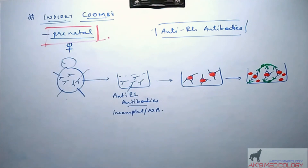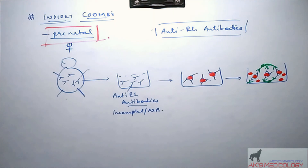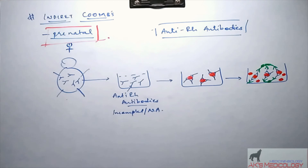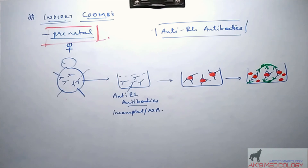The direct Coombs test is performed to identify fetuses or infants with hemolytic disease of the newborn due to Rh incompatibility, or autoimmune hemolytic anemia in which autoantibodies are formed against RBCs. That's it for Coombs test.